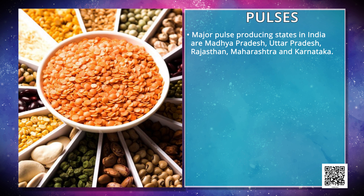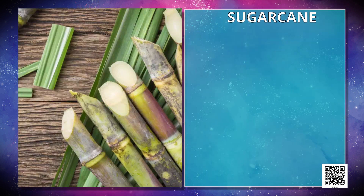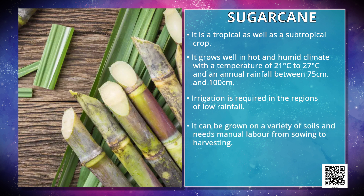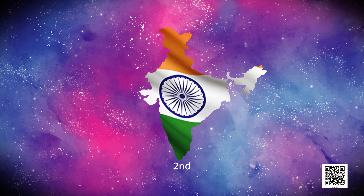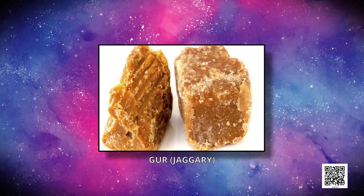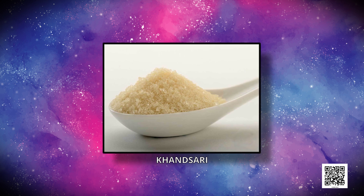Major pulse-producing states in India are Madhya Pradesh, Uttar Pradesh, Rajasthan, Maharashtra and Karnataka. Now, food crops other than grains. First and foremost is sugarcane. It is a tropical as well as a subtropical crop. It grows well in hot and humid climate with a temperature of 21 to 27 degrees Celsius and an annual rainfall between 75 cm and 100 cm. Irrigation is required in regions of low rainfall. It can be grown on a variety of soils and needs manual labor from sowing to harvesting. India is the second largest producer of sugarcane only after Brazil. It is the main source of sugar, gur (jaggery), khansari and molasses.